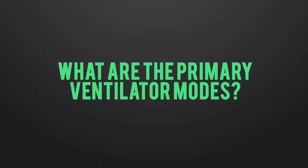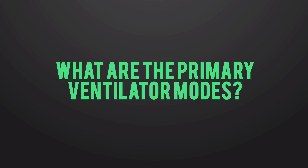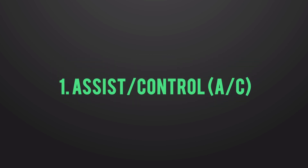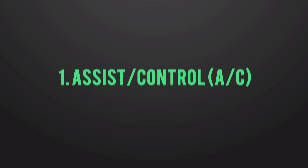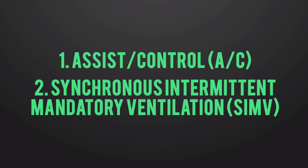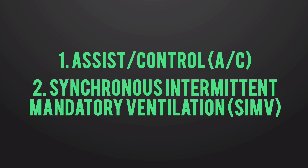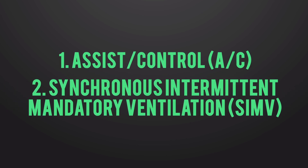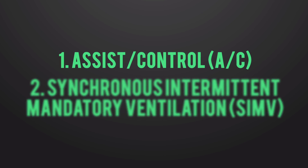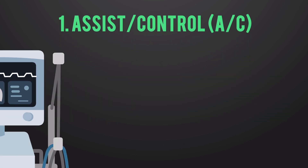What are the primary ventilator modes? These are the operational modes of the machine. The two primary modes are Assist Control, or AC, and SIMV, which stands for Synchronous Intermittent Mandatory Ventilation.